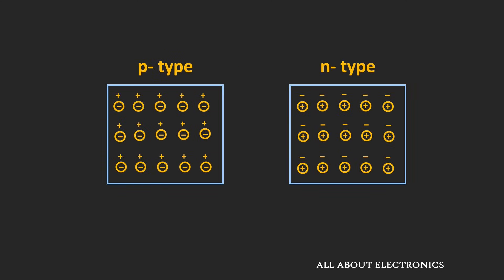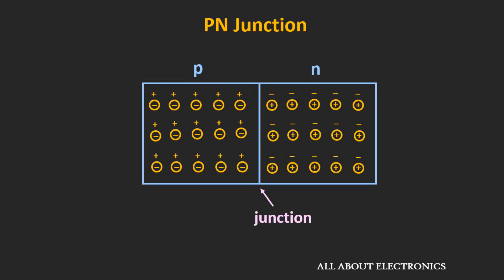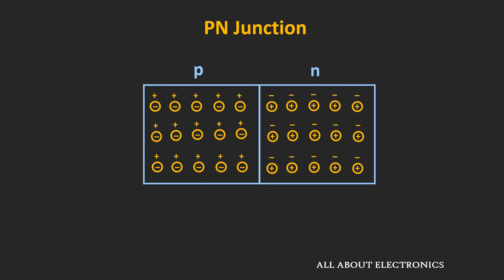By itself, p-type and n-type semiconductors act like a resistor. But by doping one side of a silicon crystal with p-type impurity and the other side with n-type impurity, we can convert this silicon crystal into the p-n junction. This junction is the border where the p-type and n-type regions meet, and this silicon crystal is also known as the diode, because the p-type and n-type regions act like two electrodes.